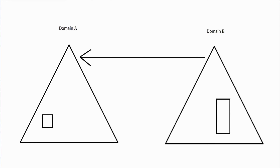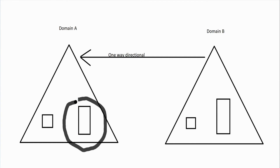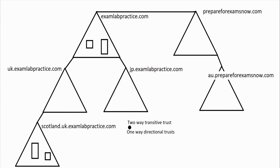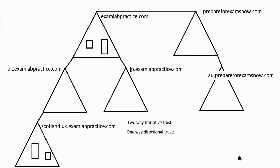When it is a one-way directional trust, Domain B's clients would not be allowed to get to a server in Domain A. It's one way. So your two main kinds of trust are two-way transitive — which goes both ways and follows through — and one-way directional trust.